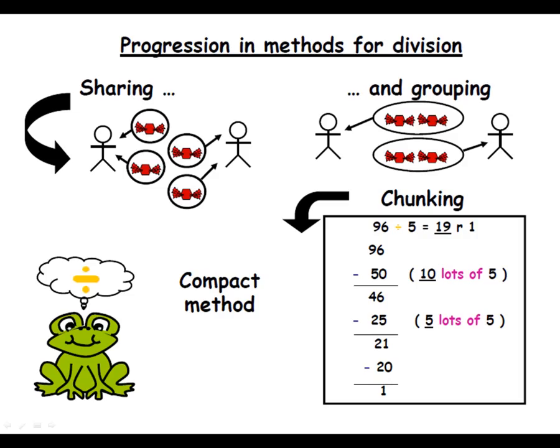It's based on their understanding of what division is — starting with a larger number of items or objects and taking three away repeatedly. Obviously, that's going to take a long time if you're working with large numbers dividing by three. So to speed the process up, you would start to take away ten lots of three, and then another ten lots of three. That's the basis of the understanding of division.